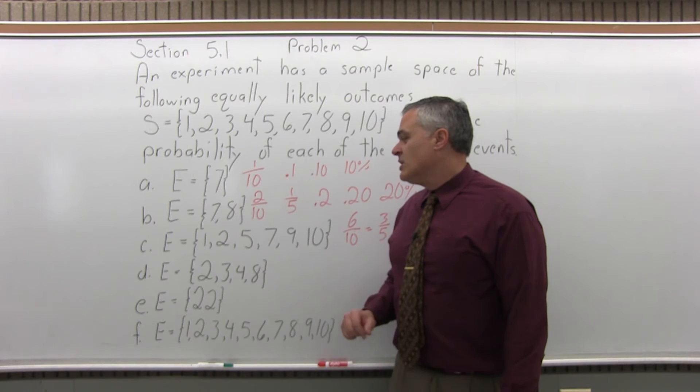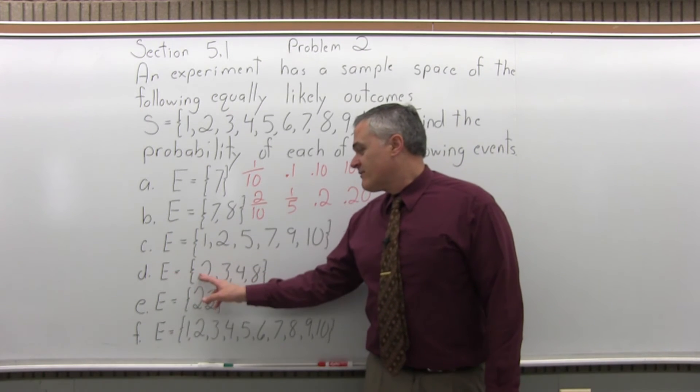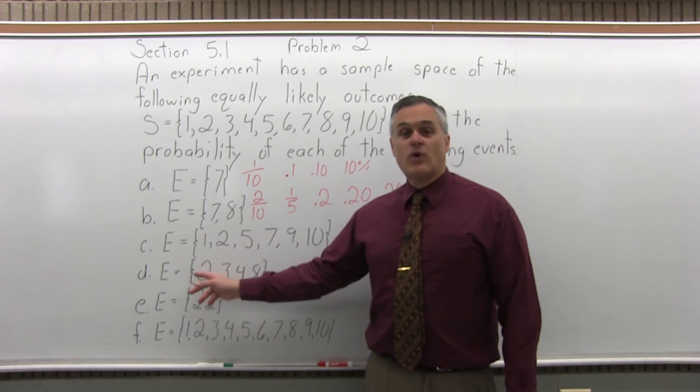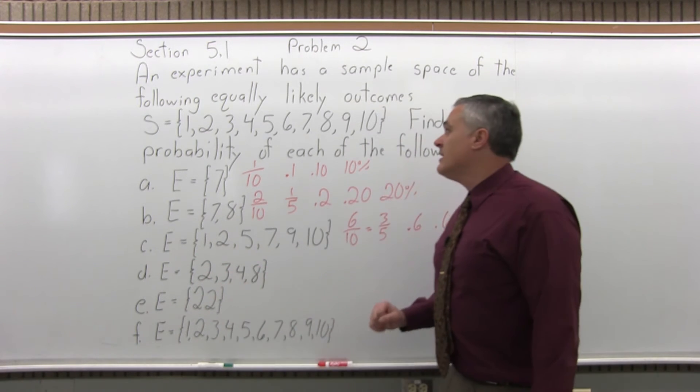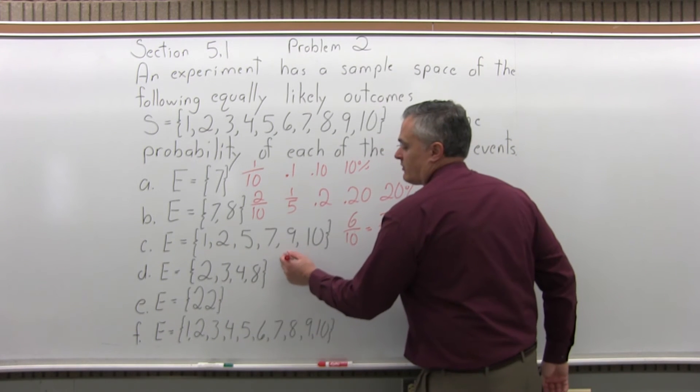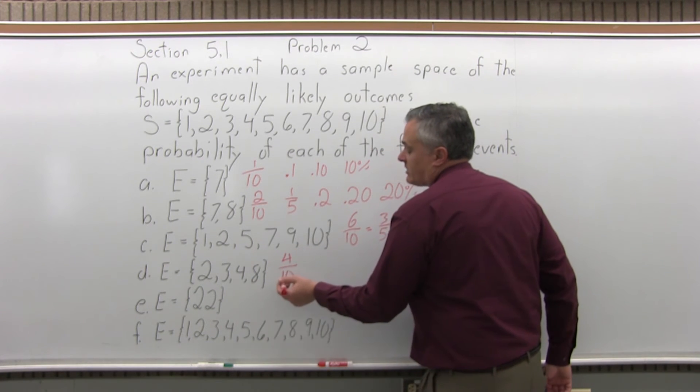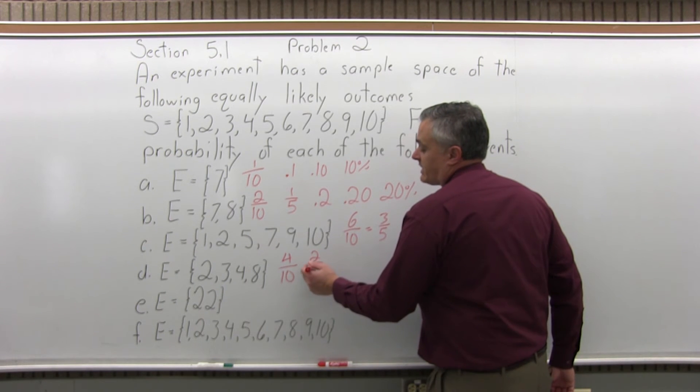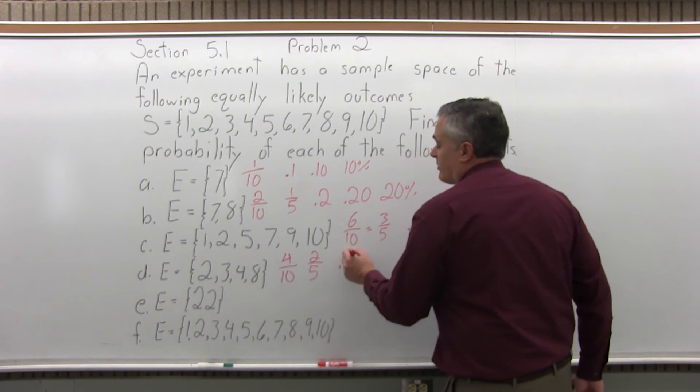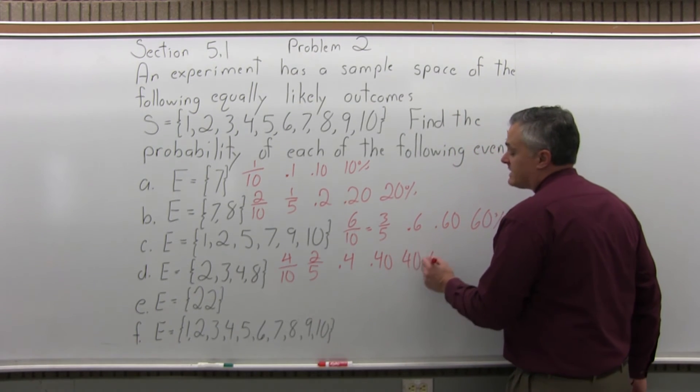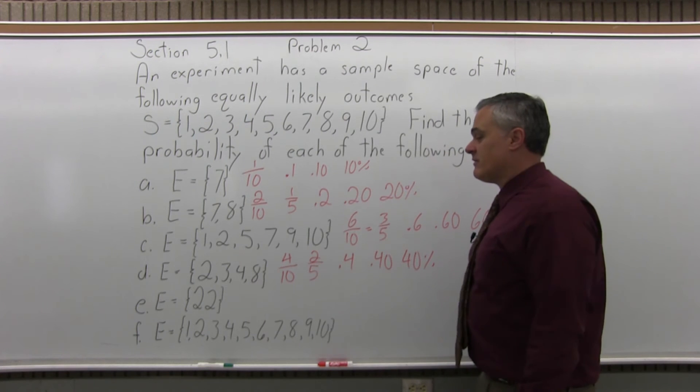Part D. What's the probability of your event having the outcomes 2, 3, 4, or 8? So again, the thing is that there are 4 possible outcomes for that event out of 10 things you could get altogether. So 4 that satisfy the event out of 10 that you can get altogether, 4 over 10, which could be reduced, if you like, to two-fifths, or you could write it as 0.4, or 0.40, or 40%. They all mean the same thing. You could do any of them.